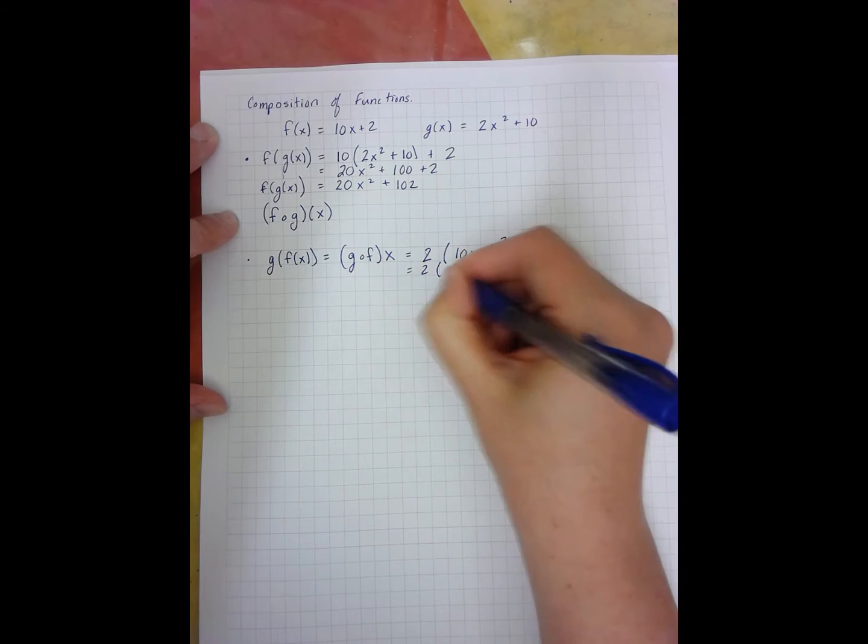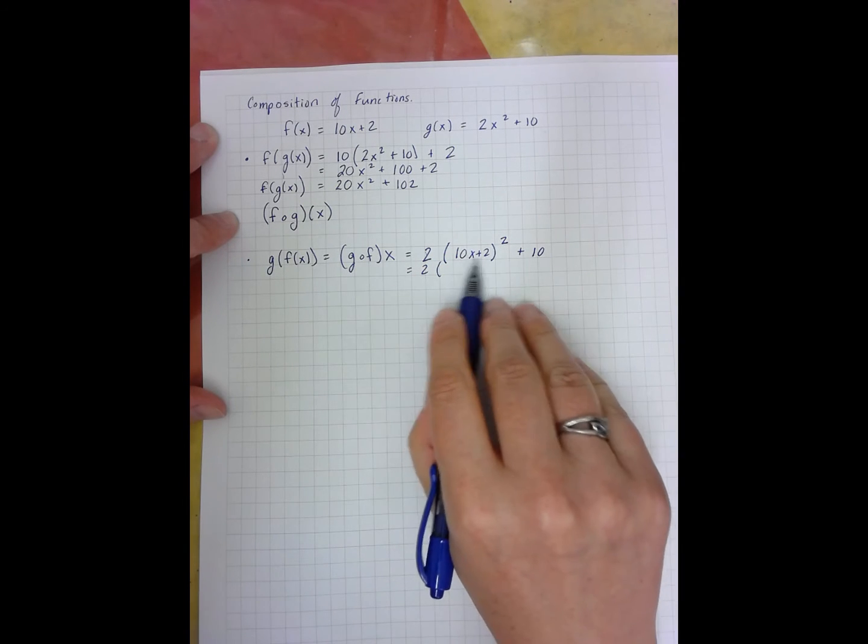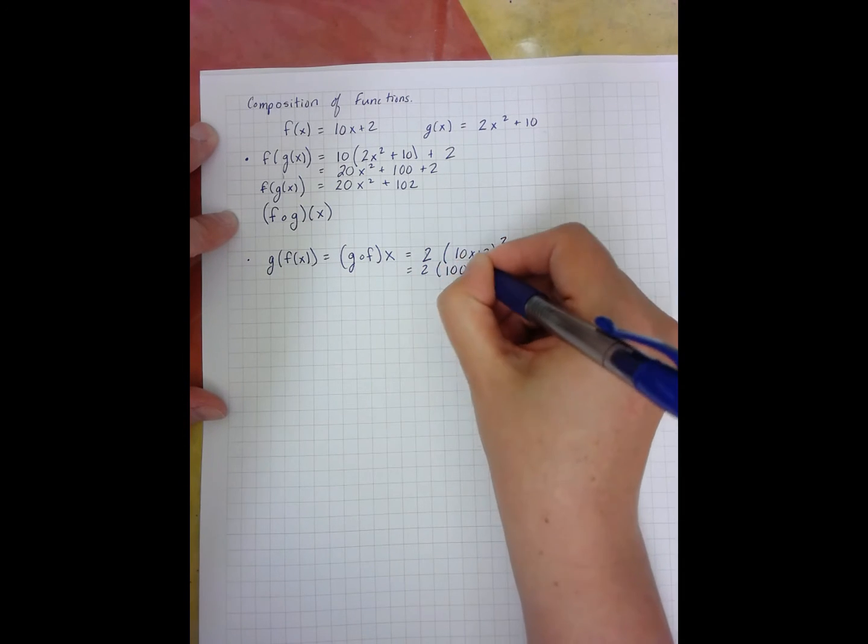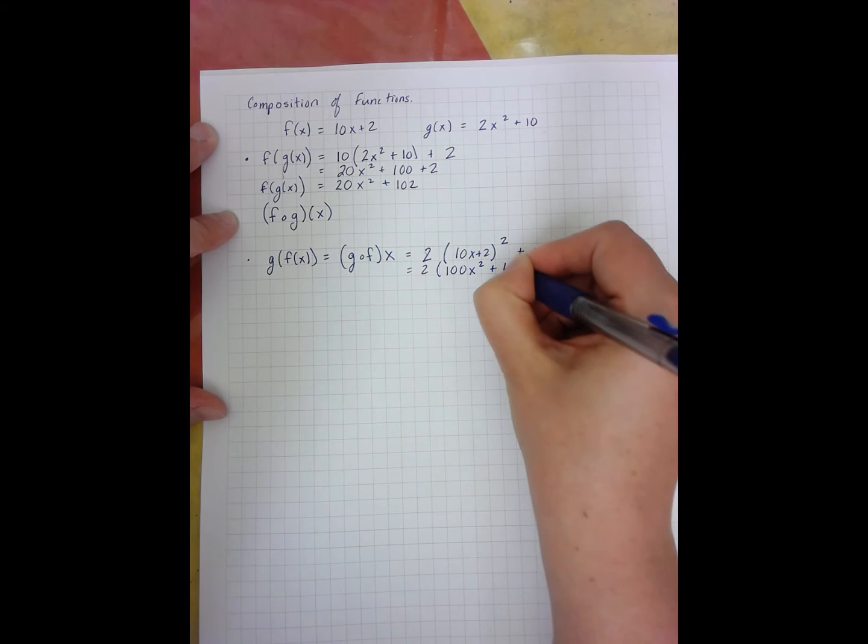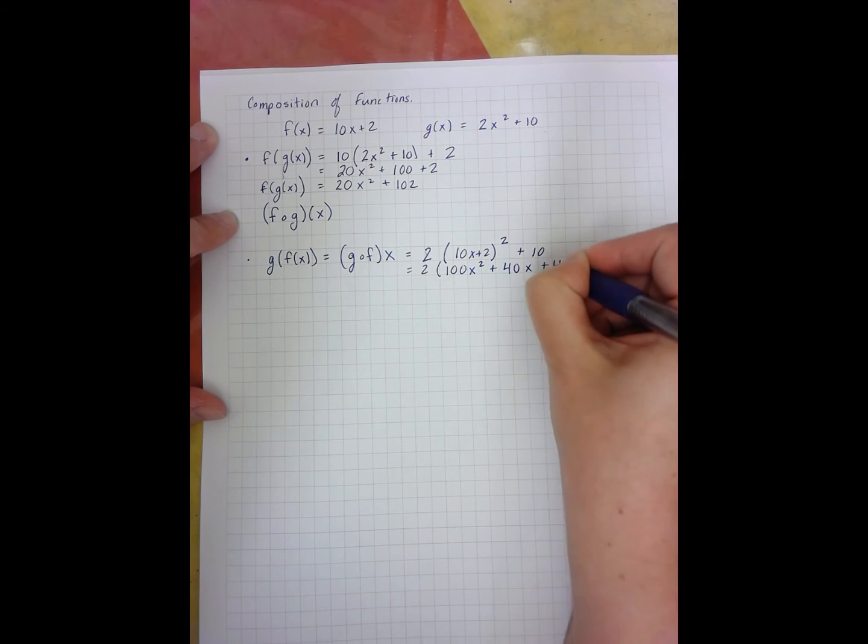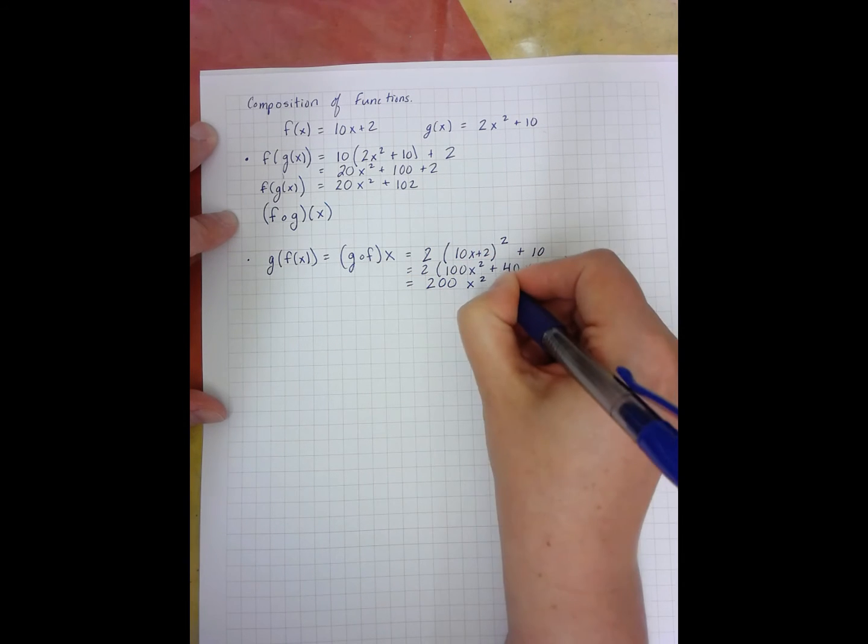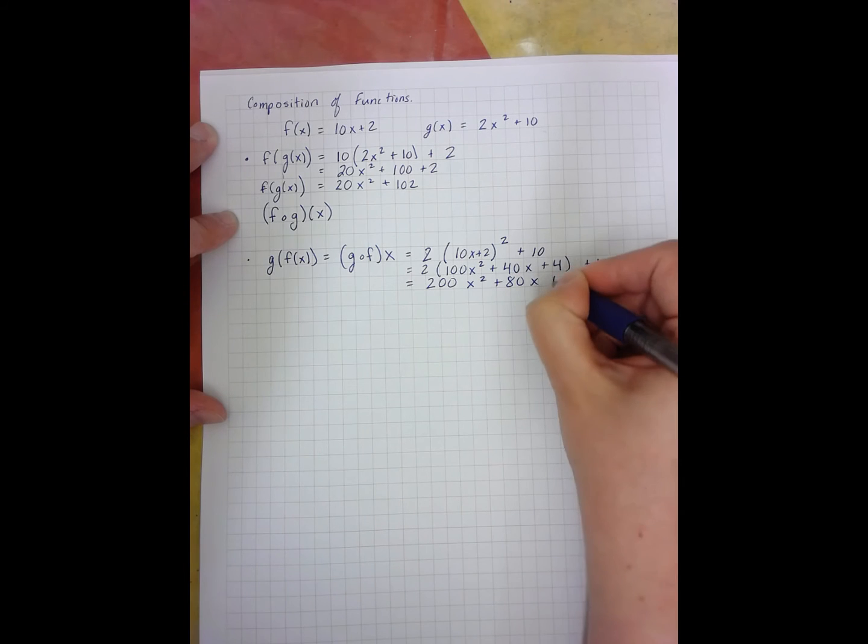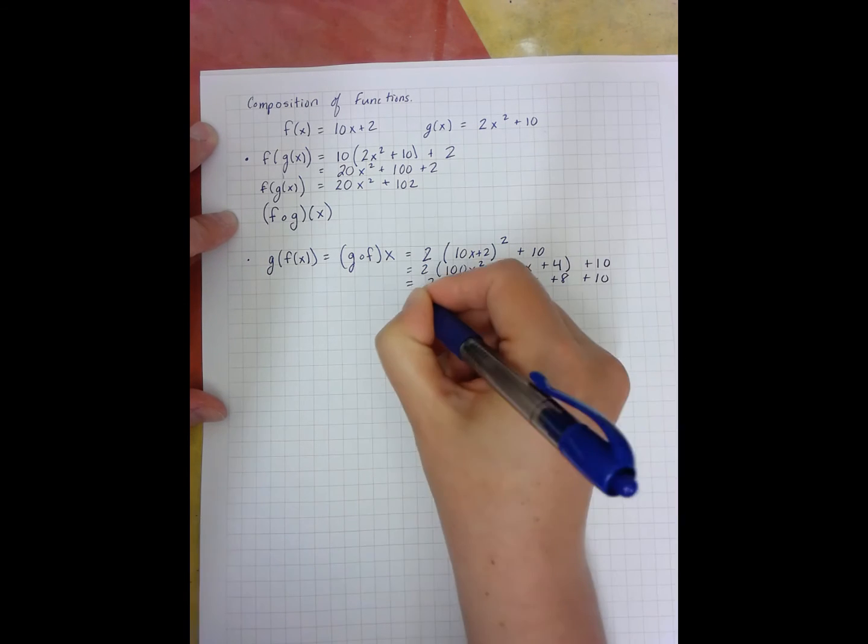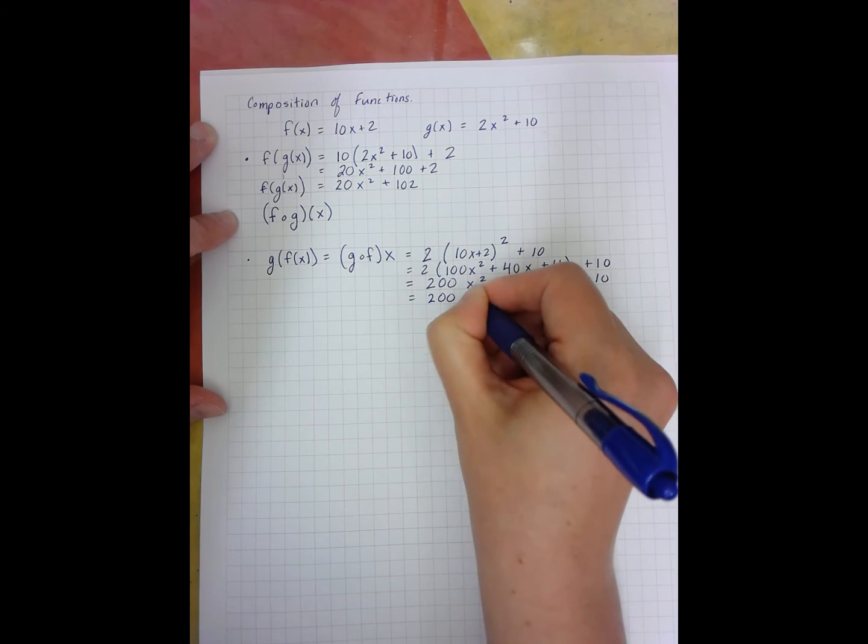And again, I simplify. Squared means I'm multiplying this times itself twice, so that gets me 100x squared plus 40x plus 4. I then distribute and then combine like terms.